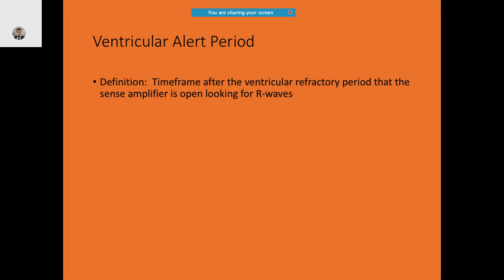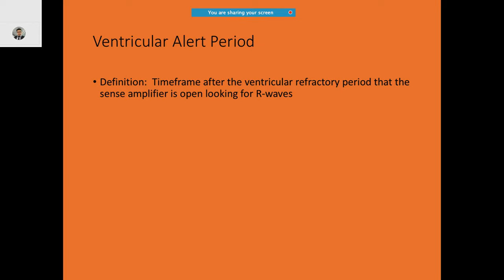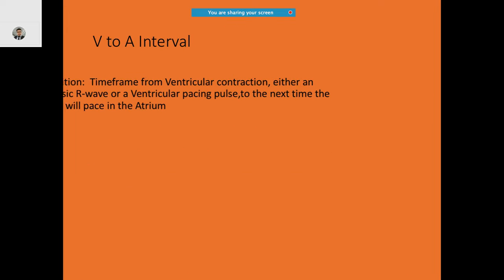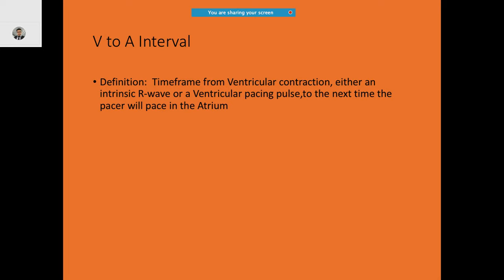The ventricular alert period is the time frame after the ventricular refractory period when the sense amplifier is open and looking for an R wave. For example, the first beat is an inherent beat, so there is a ventricular refractory period followed by an intrinsic P wave, then the ventricular alert period, and so on.